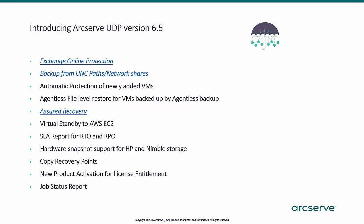Here are some of the key changes in ArcServe UDP version 6.5. Exchange Online protection has been added. Also support for backup from UNC paths or network shares. Automatic protection of newly added VMs. Agentless file level restore for VMs backed up by agentless backup. A new assured recovery task. Virtual standby to Amazon EC2. SLA reporting for RTO and RPO. Hardware snapshot support for HP and Nimble. Copy recovery points to Amazon EC2. Improved product activation and enhancements to the job status report.